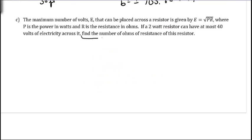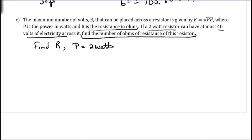Okay, so we're supposed to find the number of ohms of resistance of the resistor. P is power in watts. R is the resistance in ohms. So, we're looking for R. And we're given that we have a 2 watt resistor. And so, P is equal to 2 watts. And 40 volts of electricity. And so, that was E. So, 40 volts is E. So, now plug in what we know.